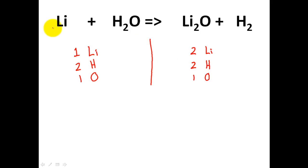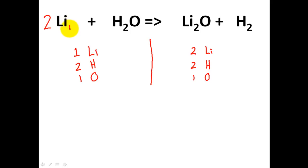Things we're allowed to do are put coefficients in front of each of these elements or compounds, and I have four locations where I can put a coefficient. A coefficient is nothing more than a multiplier. We're going to use these multipliers to balance the chemical reactions. Starting with lithium: I have two lithiums on the product side and one lithium on the reactant side, so two times one equals two atoms — and one times two is two atoms. Lithium has gone from one to two, and comparing both sides, they're balanced.